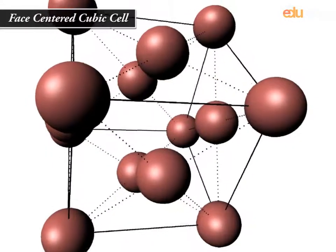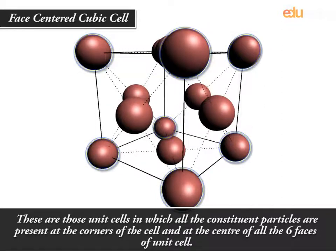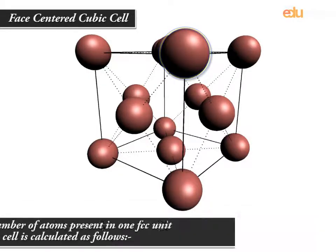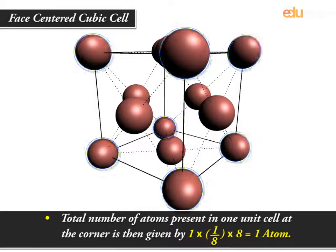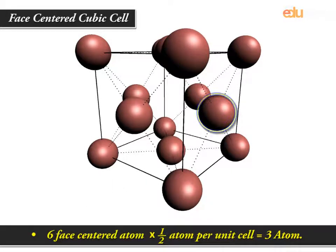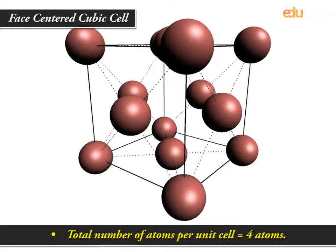Face-Centered Cubic (FCC) Cell: These are unit cells in which all the constituent particles are present at the corners of the cell and at the center of all six faces of the unit cell. The total number of atoms at the corners is 1/8 × 8 = 1 atom. The 6 face-centered atoms each contribute 1/2, giving 6 × 1/2 = 3 atoms. Therefore, the total number of atoms per FCC unit cell is equal to 4 atoms.